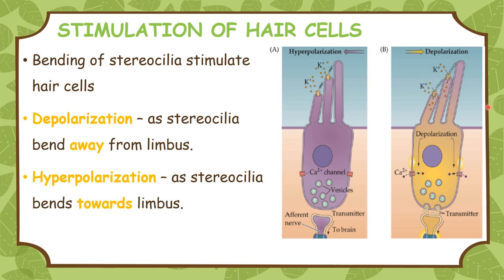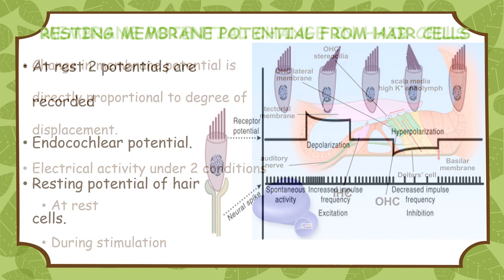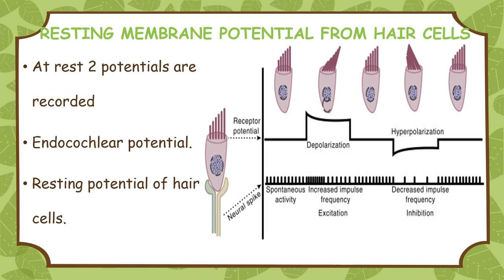Depolarization occurs when the stereocilia bend away from the limbus. Hyperpolarization occurs when the stereocilia bend towards the limbus. Membrane potential change in the hair cells: bending of the stereocilia produces a change in the membrane potential of the hair cells which is proportionate to the degree of displacement — this is called the generator potential. The electrical activity of the inner ear can be discussed under the resting condition and during stimulation of the ear.